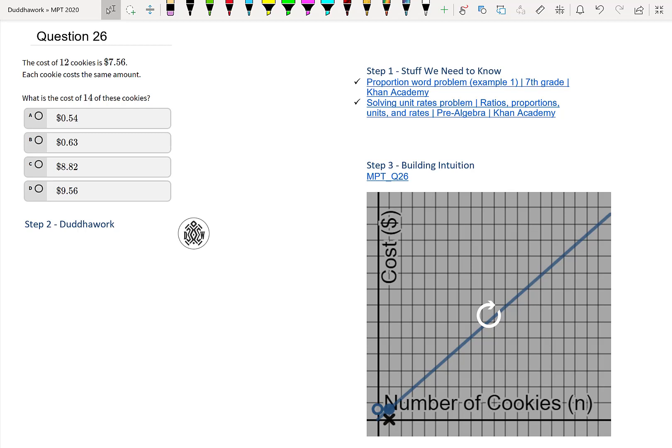So here we're asked if the cost of 12 cookies is $7.56, we can assume that each cookie costs the same amount. What is the cost of 14 of these cookies? And we have answers $0.54, $0.63, $8.82, and $9.56.